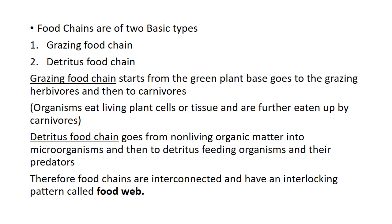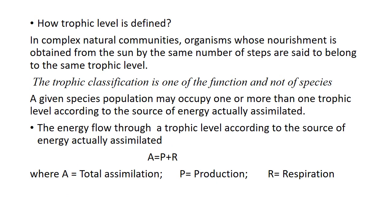Food chains are interconnected and have an interlocking pattern which is called a food web. In complex natural communities, organisms whose nourishment is obtained from the sun by the same number of steps are said to belong to the same trophic level. The trophic classification is one of function and not of species; we identify the trophic level on the basis of the function of an animal, not the species.